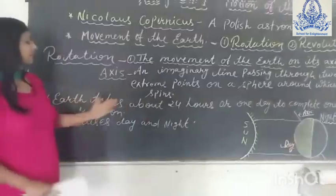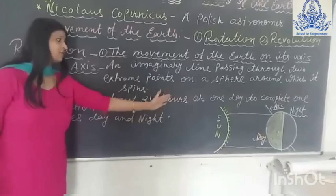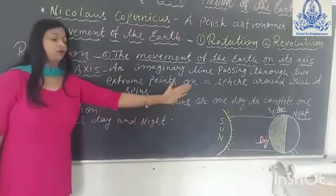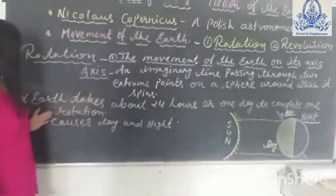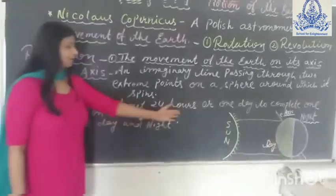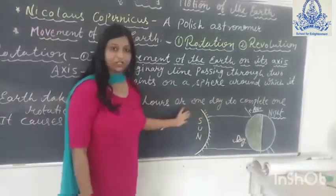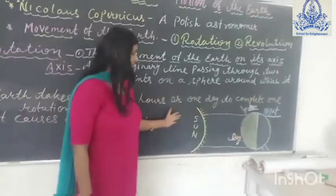The earth takes about 24 hours, or one day, to complete one rotation. Now with the help of this diagram, we can understand the rotation of the earth.